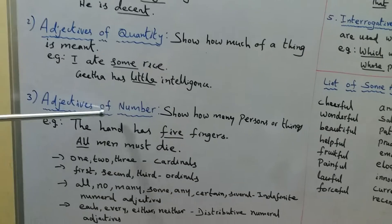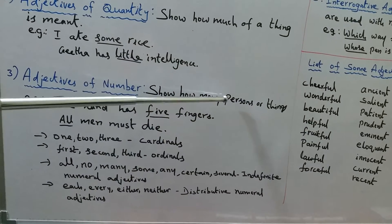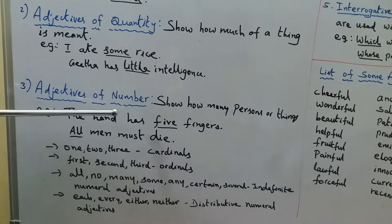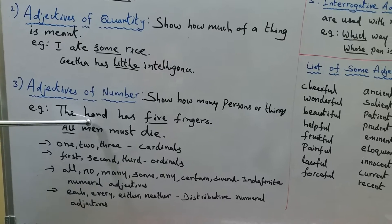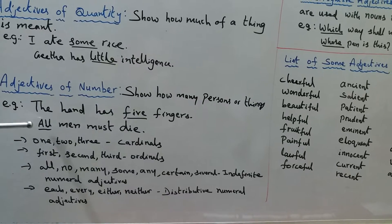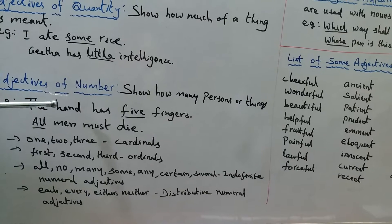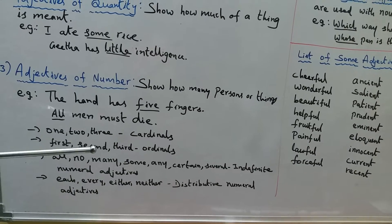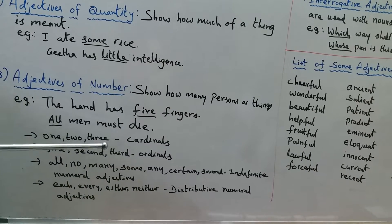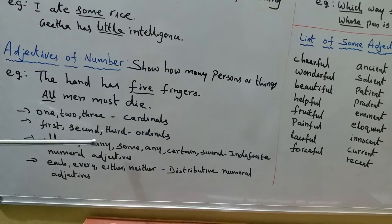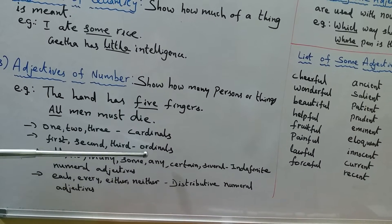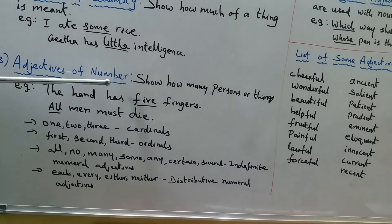Third: adjectives of number. They show how many persons or things are meant. Example sentences: 'The hand has five fingers' and 'All men must die.' Here 'five' and 'all' show number, so they fall under adjectives of number. These include cardinal numbers — one, two, three, four, five, six, seven — and ordinal numbers — first, second, third, fourth, fifth, sixth, seventh, eighth. Both cardinals and ordinals fall under adjectives of number.